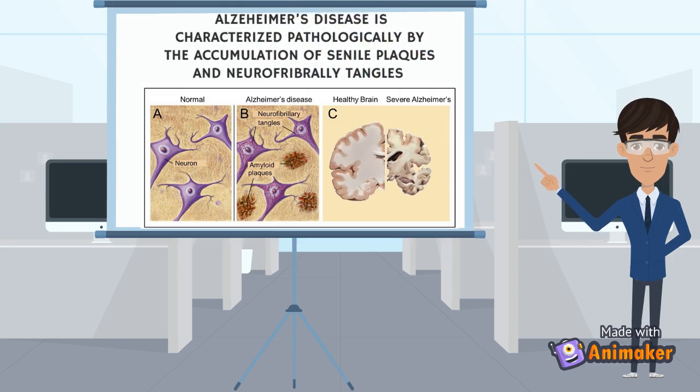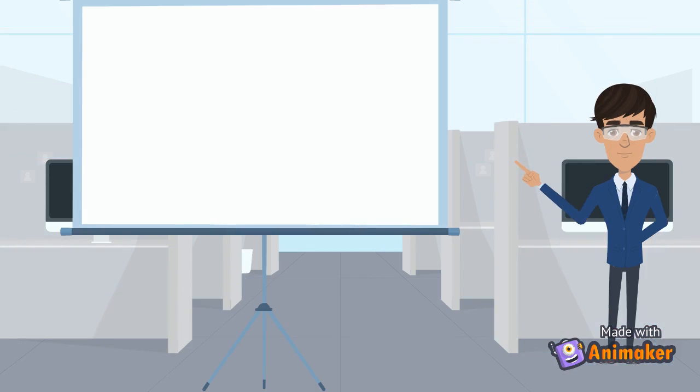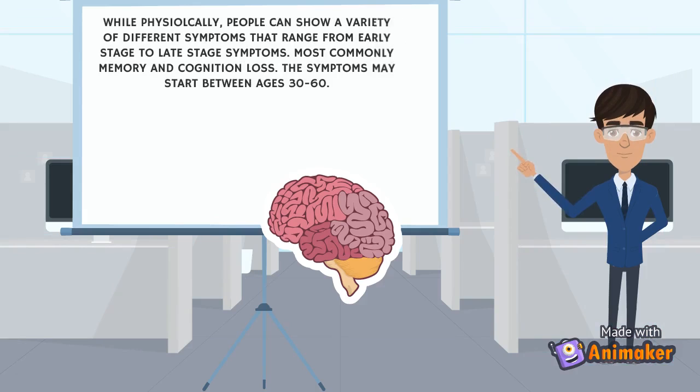Alzheimer's is characterized pathologically by the accumulation of senile plaques and neurofibrillary tangles. While physiologically, the disease will manifest itself in different ways depending on who you are and the stage of where it's at, but the most common is memory and cognition loss and the symptoms may start throughout between the ages of 30 to 60 on average.